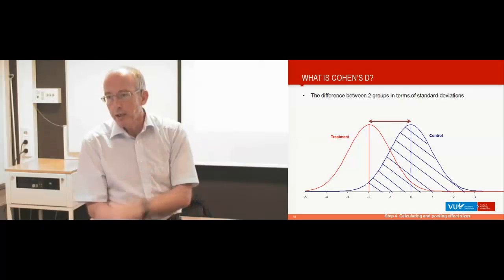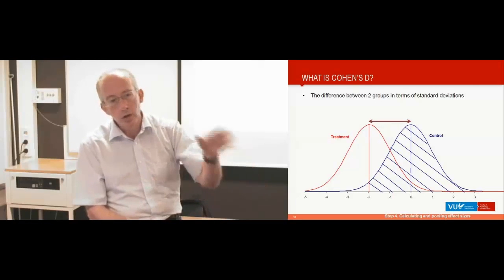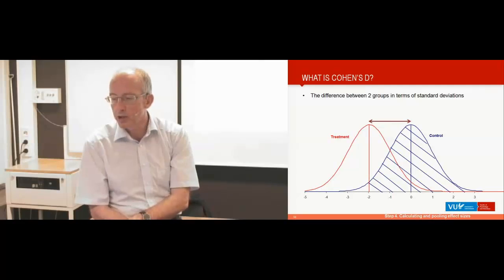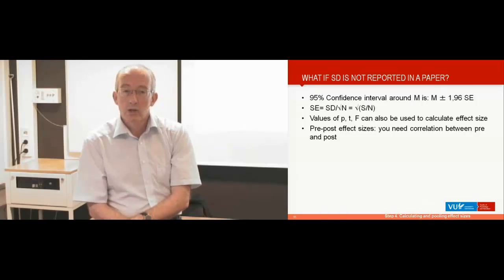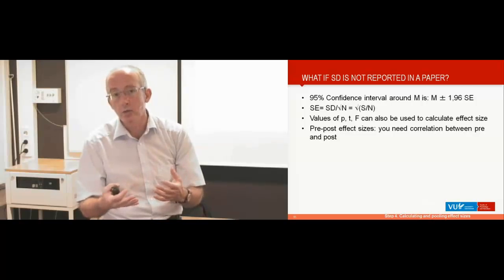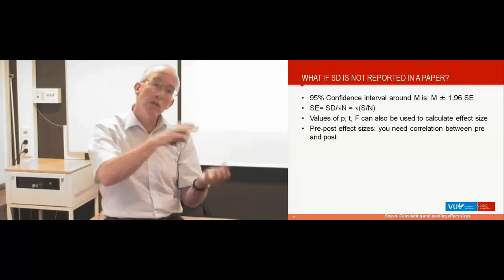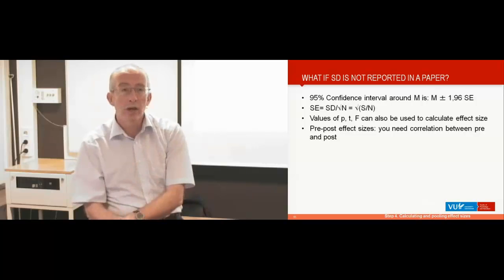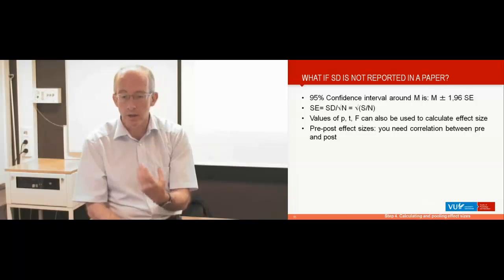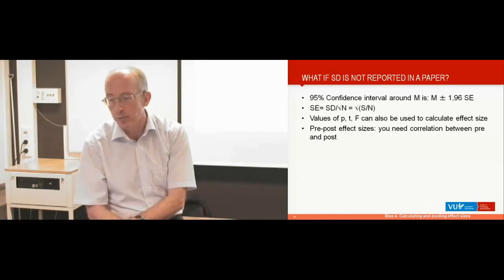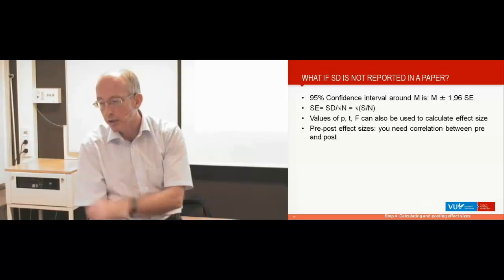This is what an effect size indicates. You have a treatment group with a normal distribution and a control group with a normal distribution, and the effect size indicates the difference between these two in terms of standard deviations. Often in trials, the standard deviation is not reported, so you have to use other statistics to calculate the standard deviation. If they report the 95% confidence interval around the means, you can convert that to the standard error, and if they only report the standard error, you can transform that to the standard deviations using these formulas.